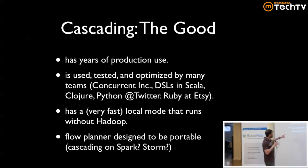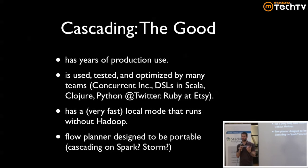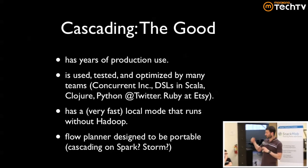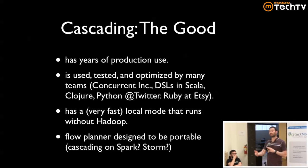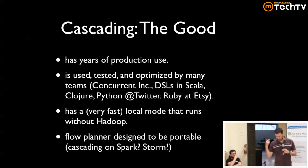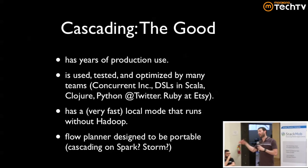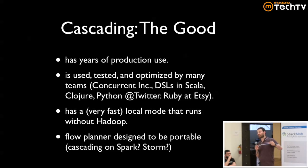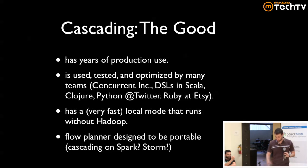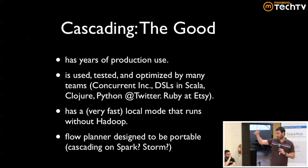One cool thing is that the flow planner is portable — there are two flow planners now, the Hadoop flow planner and the local flow planner. But you could easily write a Spark flow planner, which I want to push Chris Quintzel at Concurrent to do. We've also talked about doing a real-time flow planner on top of Storm, so you could have streaming batch operations. It would be possible to bring Cascading there, and you could use your exact same jobs in all these different cases.